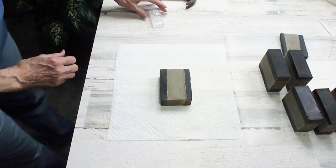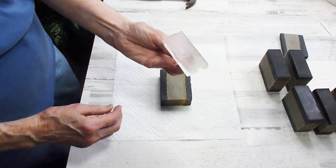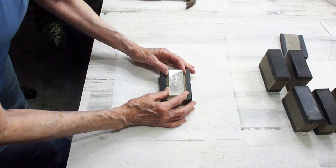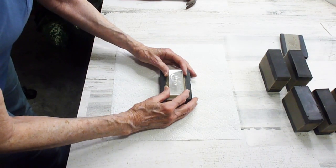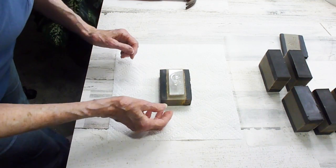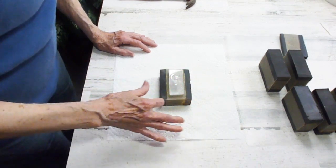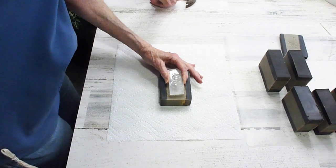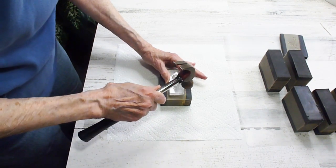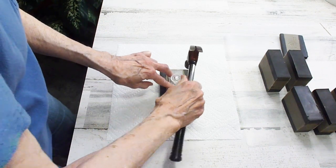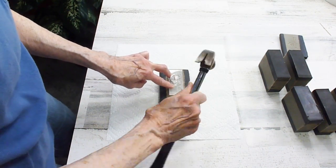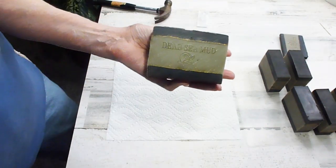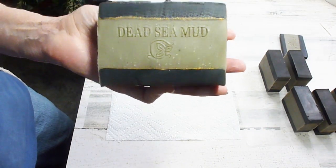We're going to be stamping our soaps today with this little acrylic stamp that Brianna designed just for these soaps. I have smoothed the sides off a little bit with a pastry knife and I haven't done any beveling or anything like that of the edges yet. So we're just going to stamp this in. And you can see what a lovely stamp that's going to be on there.